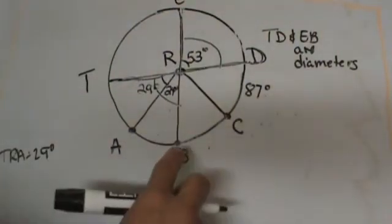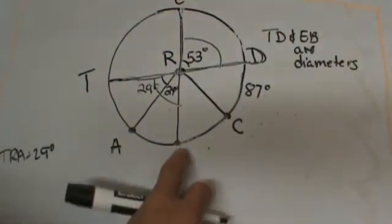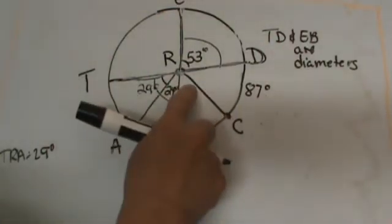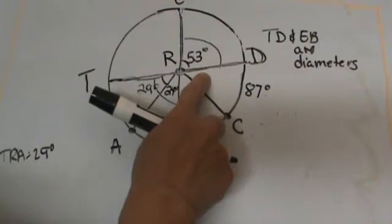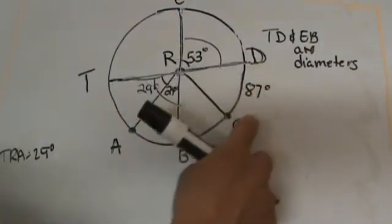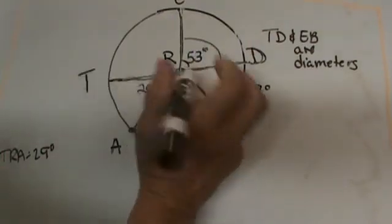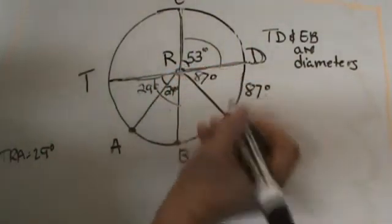Let's go down BRC. I am going down the column B to R to C. We don't know this angle, or do we? This arc DC is 87, so what do we know? That angle right here must be 87 also.